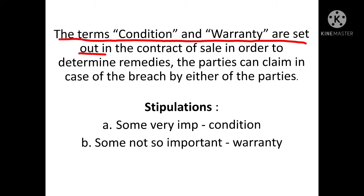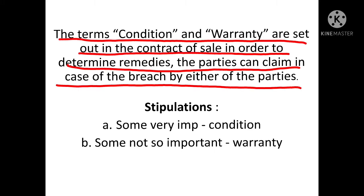The terms condition and warranty are set out in the contract of sale in order to determine remedies the parties can claim in case of breach by either of the parties. In a contract of sale, remedies are provided to both parties if there is a breach of the contract terms.